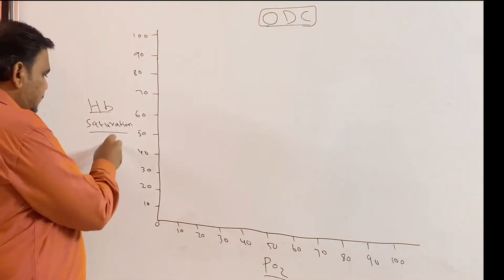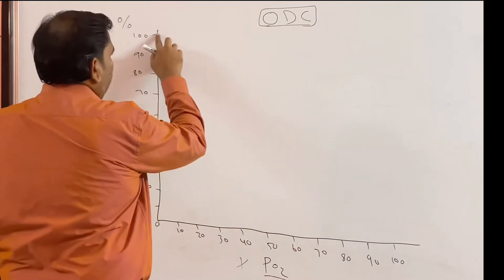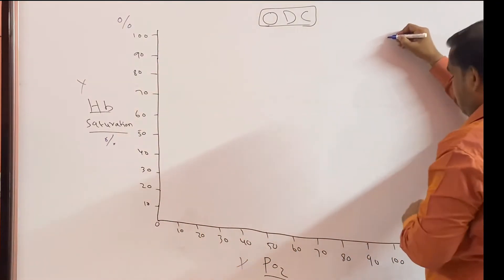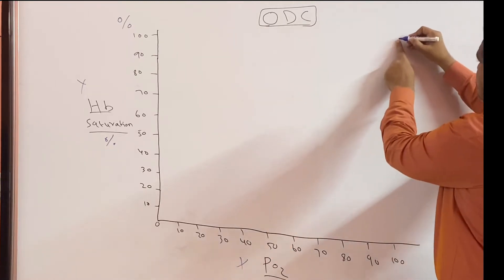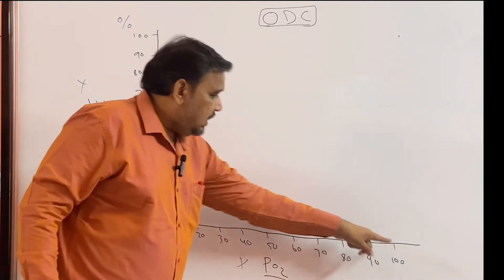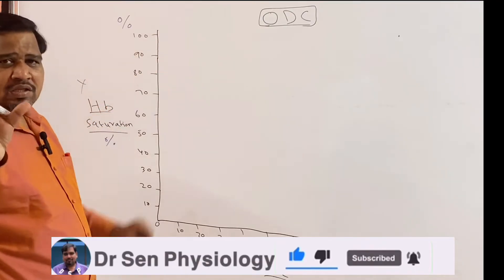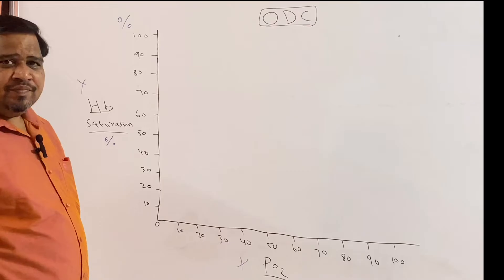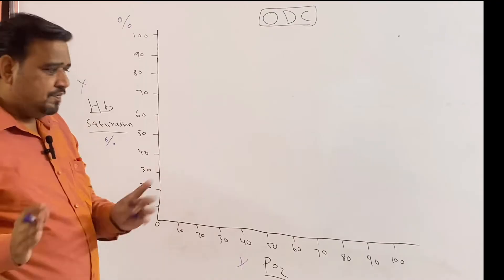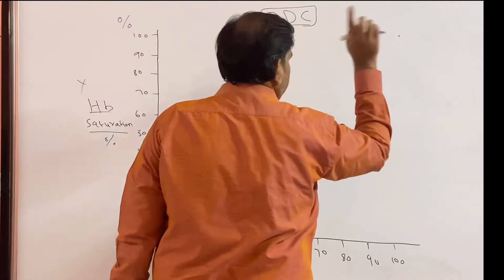Hemoglobin saturation comes in percentage. When partial pressure of oxygen is 100, hemoglobin saturation is mostly 97 to 100 percent. In arterial blood, hemoglobin saturation is 97% because 3% of oxygen is dissolved in plasma as dissolved flow, and 97% is bound with hemoglobin. So we mark this first point: PO2 100, saturation 97%.